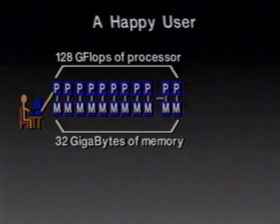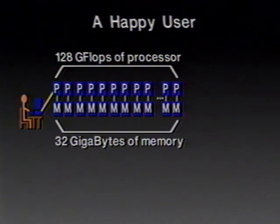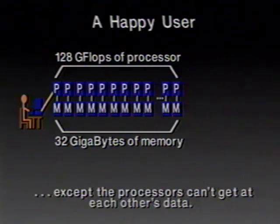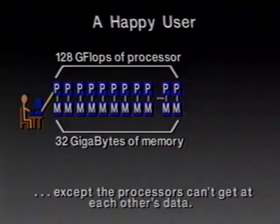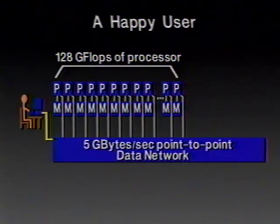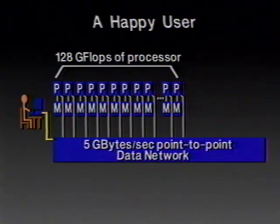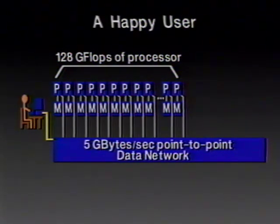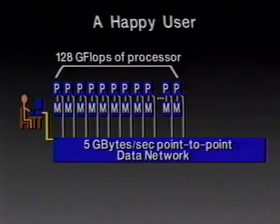Now the user is really happy because there's a lot of memory and a lot of processing power to operate on all that data, except the processors can't get at each other's data. Each processor can get at its own data but not at each other's. So we'll fix that by putting on a really good network that provides five gigabytes per second of routing power, so you can move data among the memory and each processor can get not only its own data but also the data throughout the system.